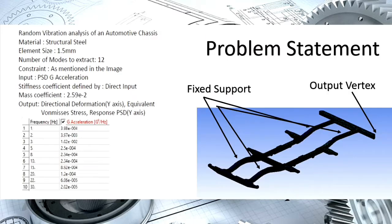Today we will analyze an automotive chassis. The material is structural steel, element size is 1.5 mm, modes to extract are 12, and the mass coefficient is 2.59 × 10². The outputs we will find are directional deformation, equivalent von Mises stresses, and the response PSD.